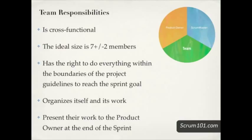The team is a cross-functional unit whose ideal size is seven people plus or minus two. The team has the right to do whatever is required in order to meet the team goals. They are self-organizing, and at the end of the sprint, the team presents the results of their efforts to the Product Owner.